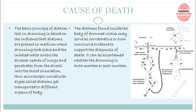In postmortem drowning, the person is already dead, so there is no circulation. Due to passive percolation, a small amount of water — and therefore a few diatoms — may reach the lungs through the nose. However, since there is no circulation, no diatoms will be found in the heart, bone marrow, or liver. Based on this, we can determine whether the person was killed first and then dumped, or was alive when they entered the water.